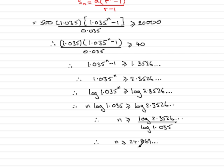Since n must be an integer (as it represents the number of years), the smallest value n can take is 25. Therefore, it will take 25 years in order to save 20,000 pounds.